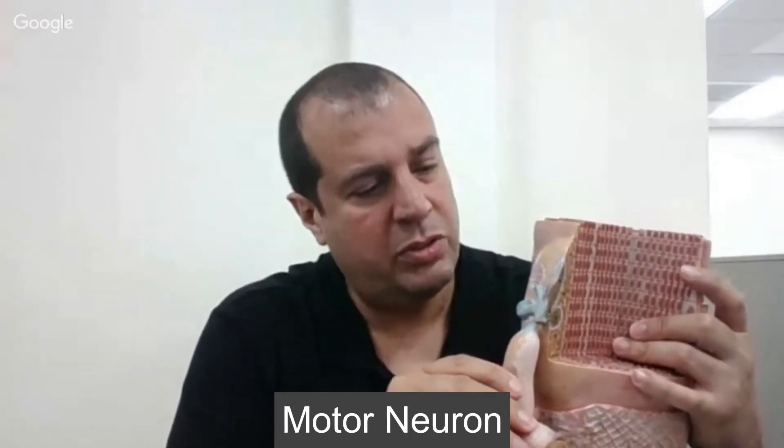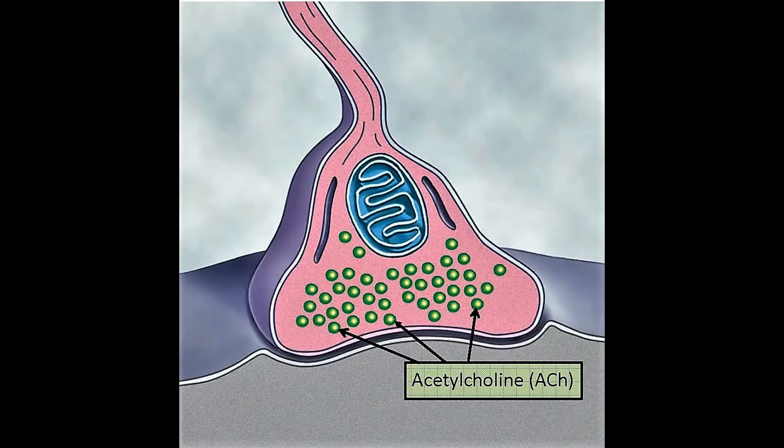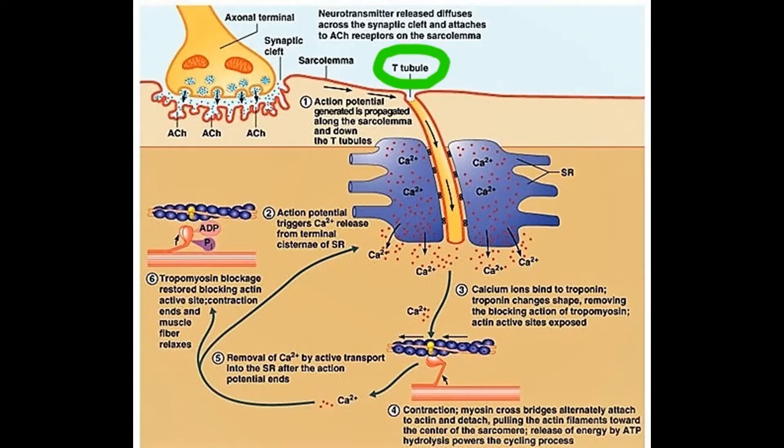The nerve impulse ends at the axon terminal — this is our motor neuron. The axon terminal contains little vesicles holding the neurotransmitter acetylcholine, which crosses the synaptic cleft and sits on receptors of the motor end plate. This causes depolarization of the sarcolemma, which then travels down the t-tubules, causing the terminal cisternae to release calcium for sarcomere contraction.